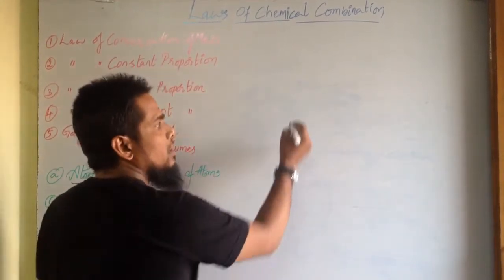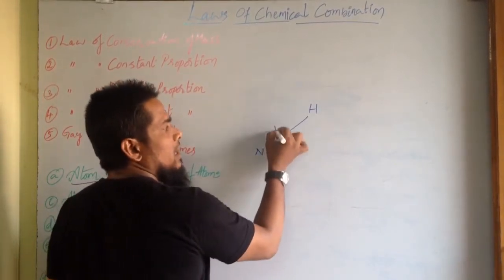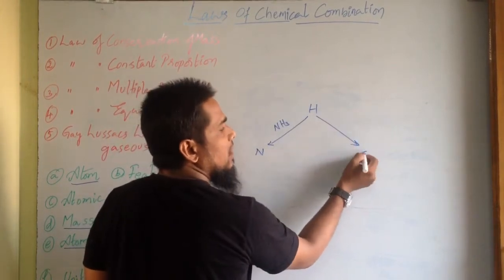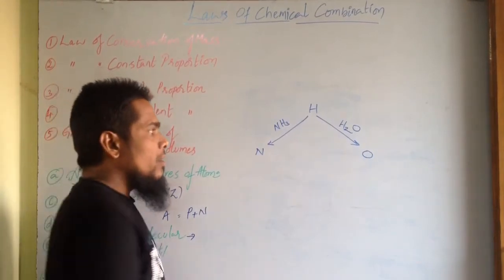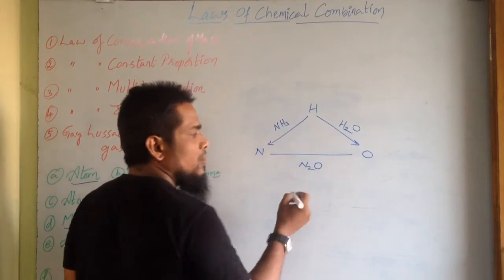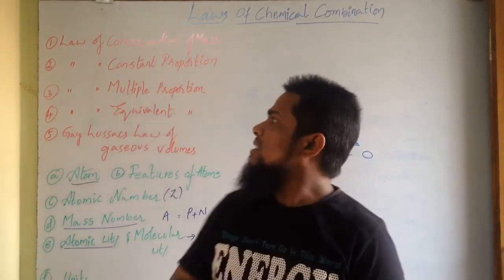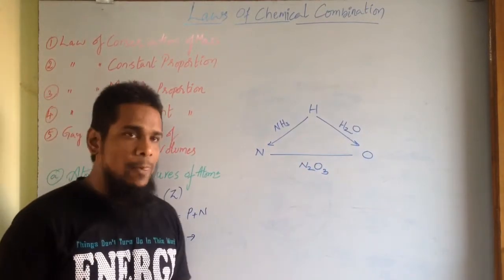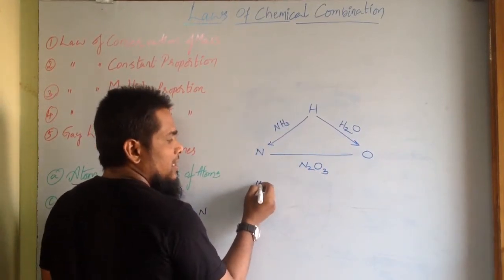For example, take hydrogen: it combines with nitrogen and forms ammonia; hydrogen combines with oxygen and forms water. Now nitrogen and oxygen also combine with each other and form N2O3. Let us apply and check the law of equivalent proportions with this example.